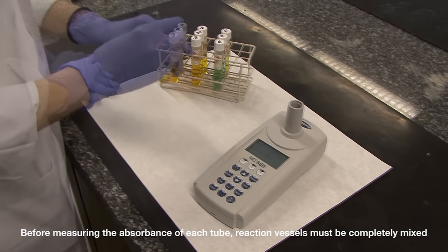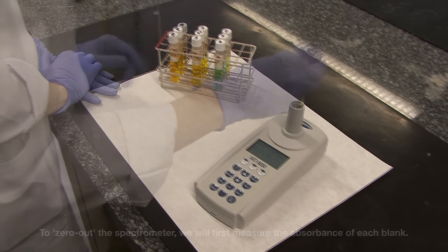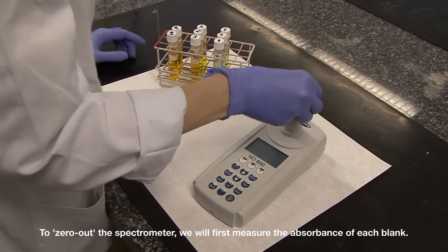Before measuring the absorbance of each tube, reaction vessels must be completely mixed. Now, it is time to use the spectrophotometer. It has to be set at a wavelength of 600 nm.